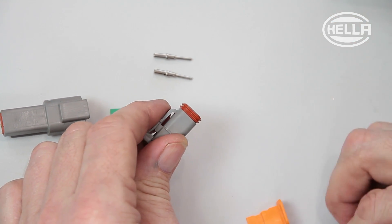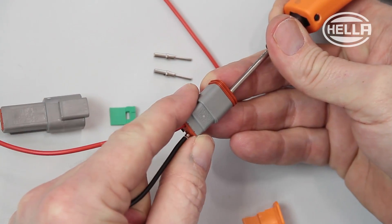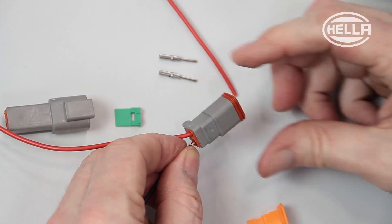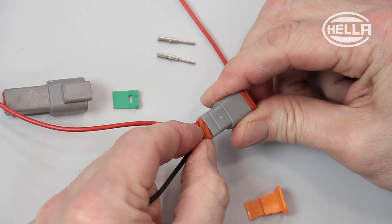The secondary fuse in the housing must also be removed before dismantling. Then you will be able to pull the cable out backwards by releasing the locking tab on the connector or the housing.